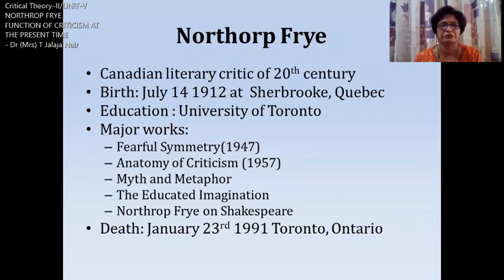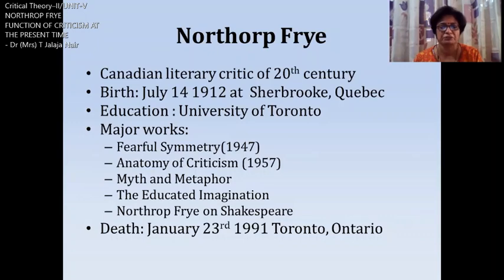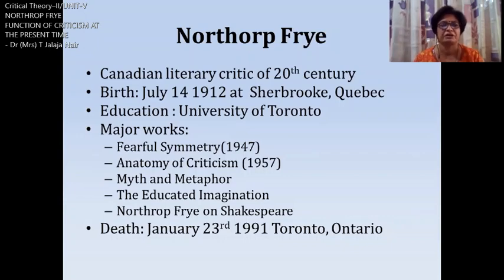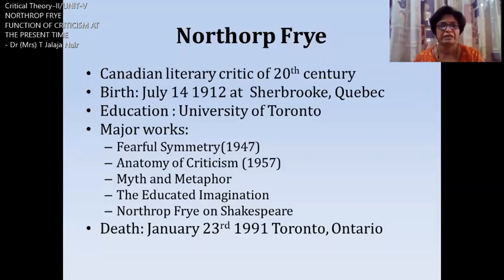He had his education at the University of Toronto. Later on, he worked as a professor of English at Victoria College at the University of Toronto since 1939. He achieved international recognition for his literary theories. Some of his major works are Fearful Symmetry, a work on the poetry of Blake; Anatomy of Criticism; Myth and Metaphor; The Educated Imagination; and Northrop Frye on Shakespeare.